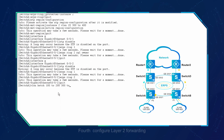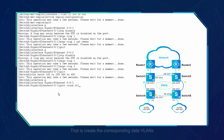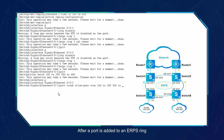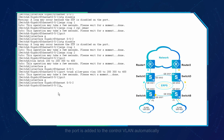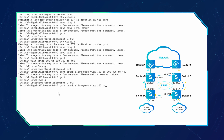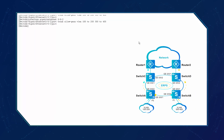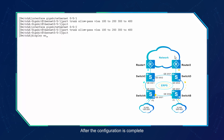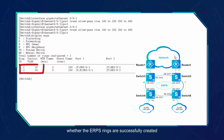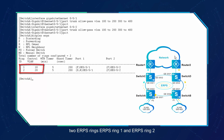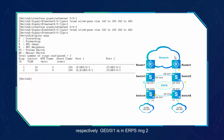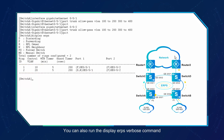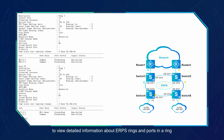Fourth, configure layer 2 forwarding on switches A, B, C, and D — that is, create the corresponding data VLANs on each switch and add the ports to each data VLAN. After a port is added to an ERPS ring configured with the control VLAN, the port is added to the control VLAN automatically. After the configuration is complete, run the display ERPS command to check whether the ERPS rings are successfully created. Using switch A as an example: in the command output, ERPS ring 1 and ERPS ring 2 are created on switch A, with control VLANs VLAN 10 and VLAN 20 respectively. GE0/0/1 is in ERPS ring 2 and is the RPL owner port; this port has been blocked to prevent loops. You can also run the display ERPS verbose command to view detailed information about ERPS rings and ports in a ring.